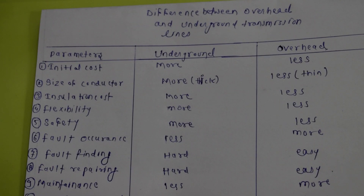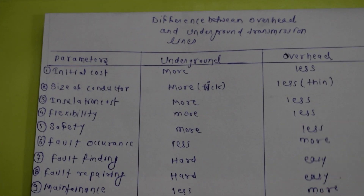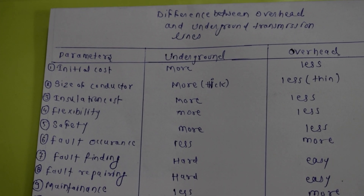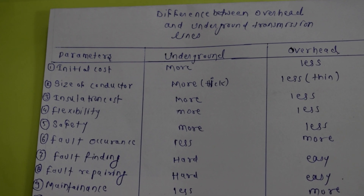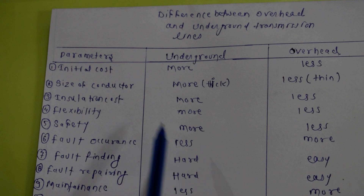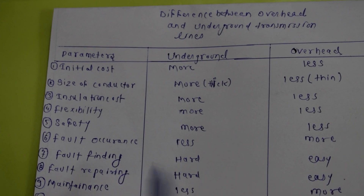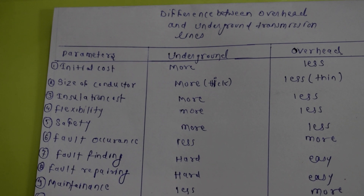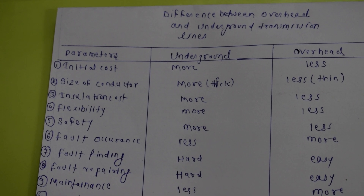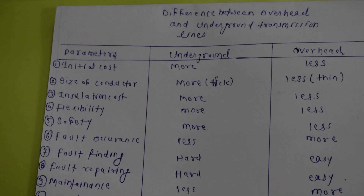The sixth point is fault occurrence. Locating faults in underground transmission lines is hard because we don't know the particular point or zone where the fault has occurred. In overhead, we can identify the fault location using relays. Underground relays currently lack the advanced technology to identify the particular fault location.